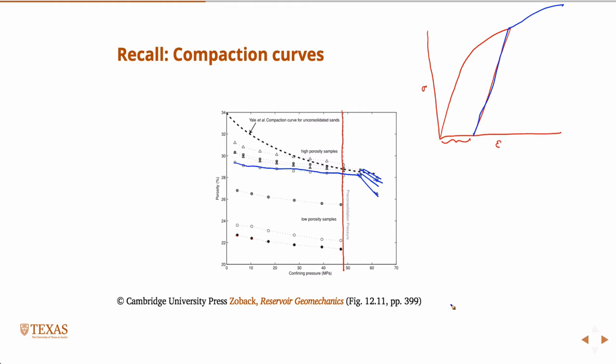That dashed line is a model, and in my opinion, not a very good one, but it's a model for these guys Yale et al. compaction curve in the unconsolidated sands. The model doesn't take into effect that there's some sort of pre-consolidated pressure.